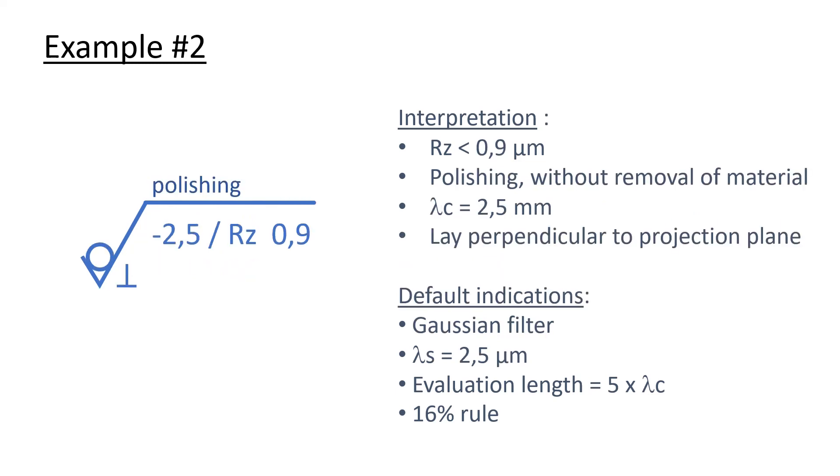Here the cutoff of the main filter, 2.5 mm, is not the default cutoff value. It is therefore written in the specification. Be careful with the dash in front of the cutoff value. It is not a negative sign. It is just a separator from the micro roughness cutoff value that is omitted because it is the default value of 2.5 micrometers.